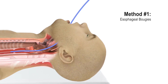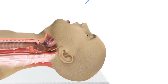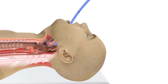Shown first is serial dilations using esophageal bougies. Bougie insertions are performed through the mouth and past the area of narrowing. Larger and larger diameter bougies are inserted one after another to slowly stretch open the esophagus.